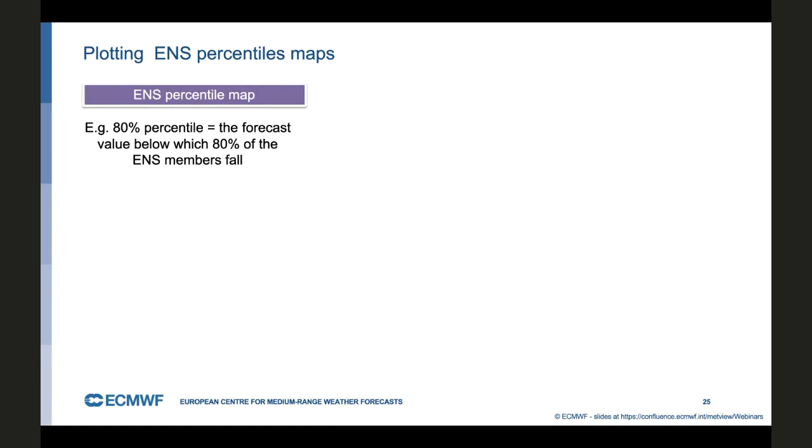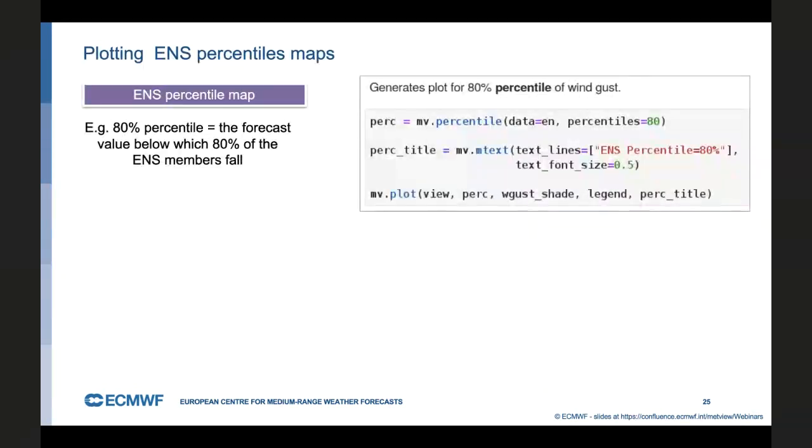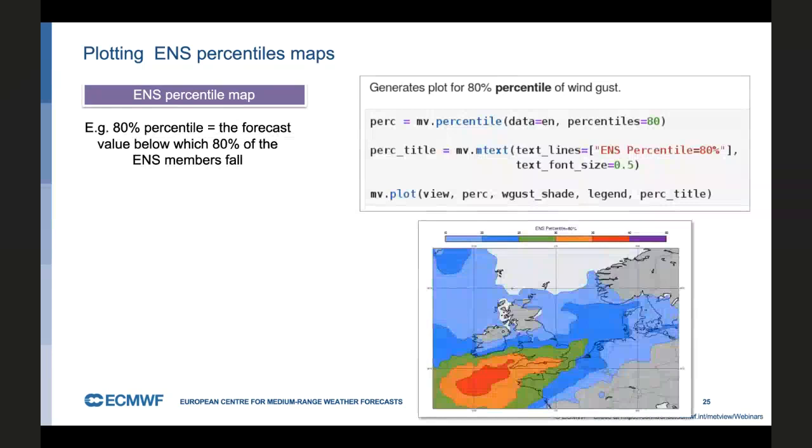Another way of looking at the probabilities and actually on the actual distribution in the ensemble forecast is to use a percentile map. And so what it means, for example, for the 80% percentile map, the values indicate the forecast value below which 80% of the ensemble members fall. So if you want to compute it, just need to use the percentile function for it. The result is a new fieldset. Just define a new custom title for it and then call the usual Metview plot command and we have the percentile map.